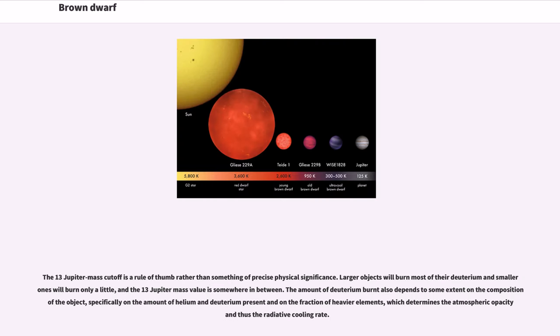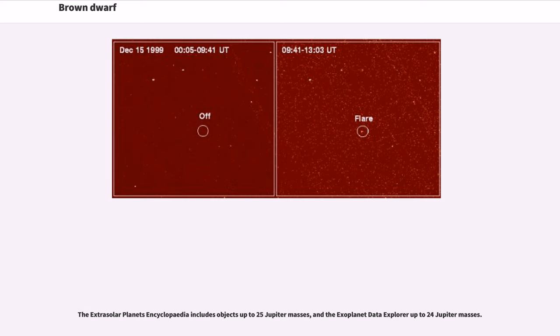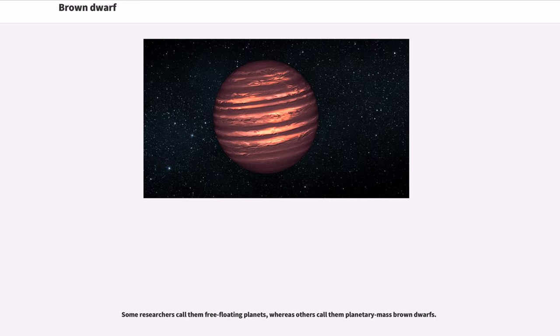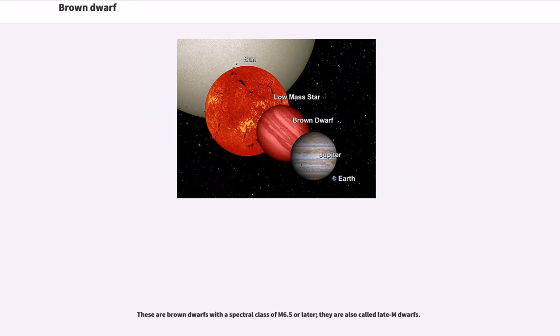The 13 Jupiter mass cutoff is a rule of thumb rather than something of precise physical significance. Larger objects will burn most of their deuterium and smaller ones will burn only a little, and the 13 Jupiter mass value is somewhere in between. The amount of deuterium burned also depends to some extent on the composition of the object. The Extrasolar Planets Encyclopedia includes objects up to 25 Jupiter masses and the Exoplanet Data Explorer up to 24 Jupiter masses. Objects below, called sub-brown dwarfs or planetary-mass brown dwarfs, form in the same manner as stars and brown dwarfs but have a mass below the limiting mass for thermonuclear fusion of deuterium.